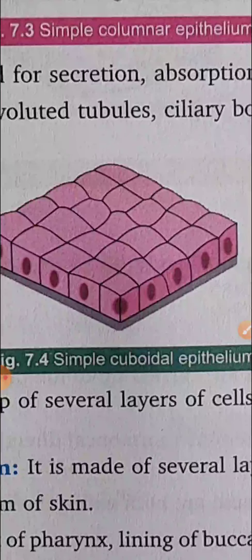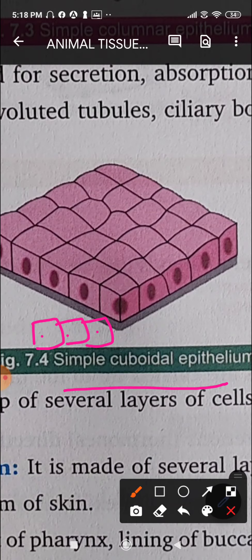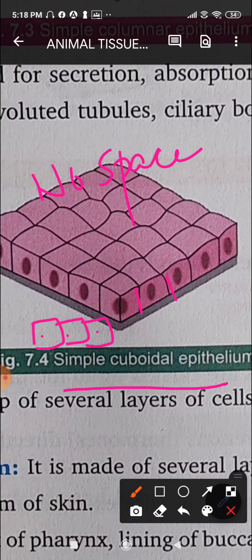The third type of simple tissue is cuboidal epithelium: a single layer thick tissue made up of cube-shaped cells joined tightly with no space between them. It is adapted for secretion, absorption, excretion, and division. It is found in the proximal and distal convoluted tubules of the nephron, the ciliary body and choroid of the eye, thin bronchioles, and linings of sweat glands.